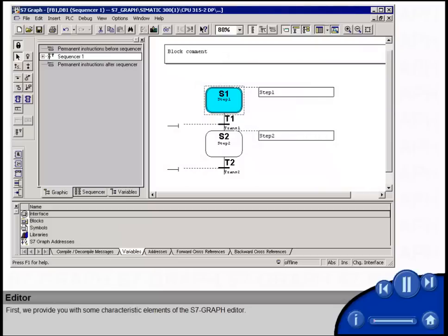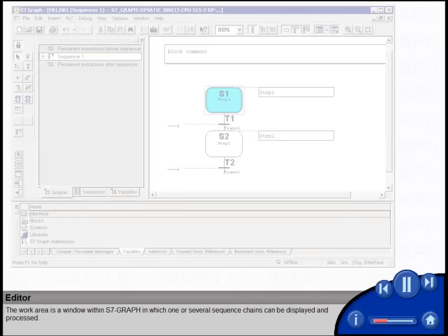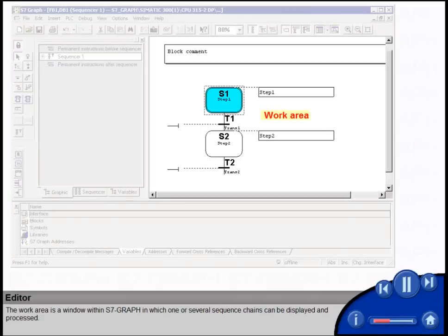First, we provide you with some characteristic elements of the S7-GRAPH editor. The toolbars contain symbols on which you can click to access the most frequently used menu commands. The work area is a window within S7-GRAPH in which one or several sequence chains can be displayed and processed.